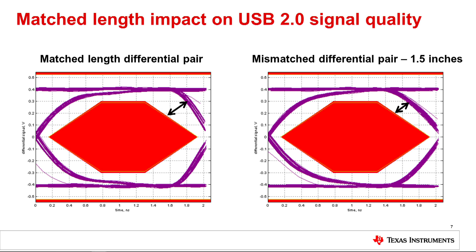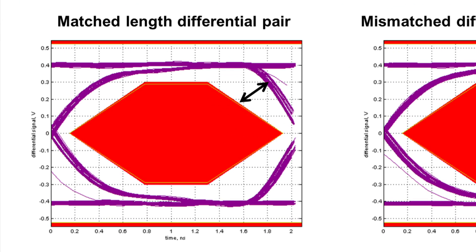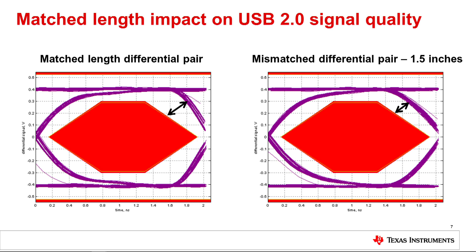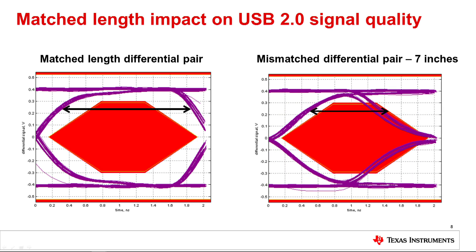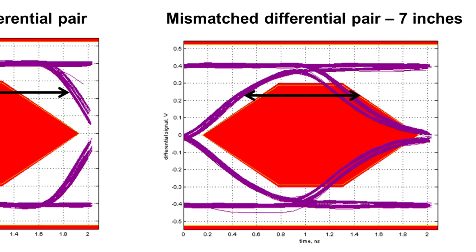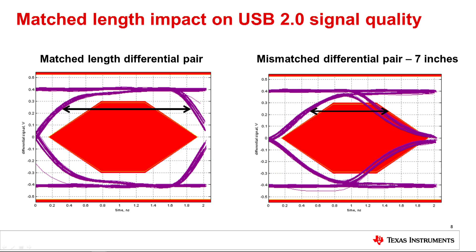Trace length matching can also have an impact on signal quality. On the left is an eye diagram from a matched length layout, less than 50 mils mismatch. On the right is an eye diagram for a layout with a trace length mismatch of 1.5 inches. The eye width is impacted. The impact of trace length matching on signal quality can be difficult to see in a USB 2.0 eye, so we created an exaggerated mismatch. On the left is an eye diagram from a matched length layout, less than 50 mils mismatch. On the right is an eye diagram for a layout with a trace length gross mismatch of 7 inches. Noticeably noisier signaling and impact to the eye width can be seen.